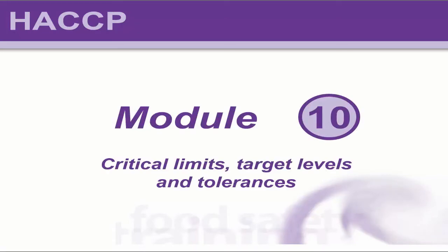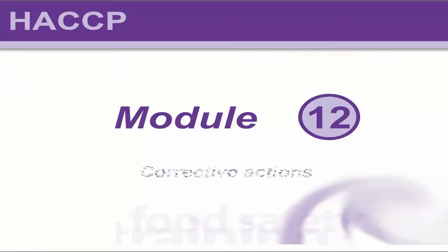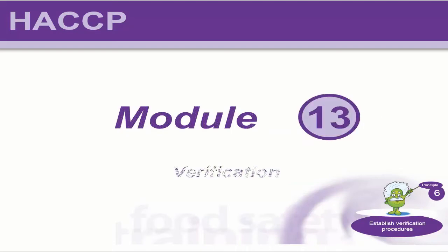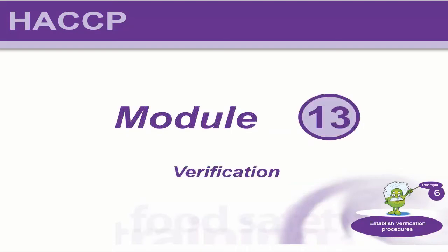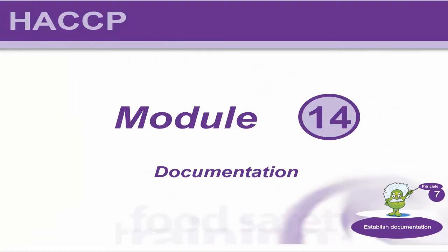Module 9 covers critical control points. Module 10 covers critical limits, target levels and tolerances. Module 11 takes us on to monitoring. Module 12 covers corrective actions. Module 13 is verification. And Module 14 covers documentation.